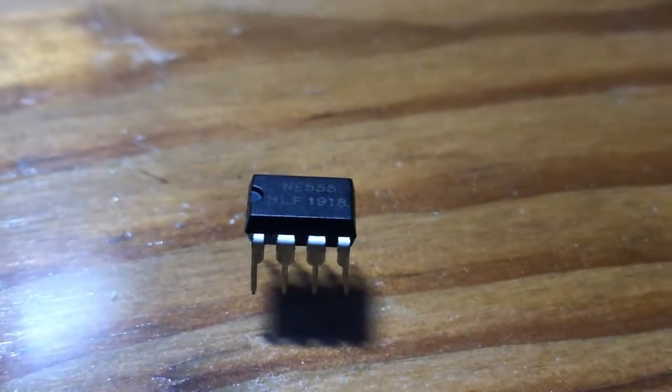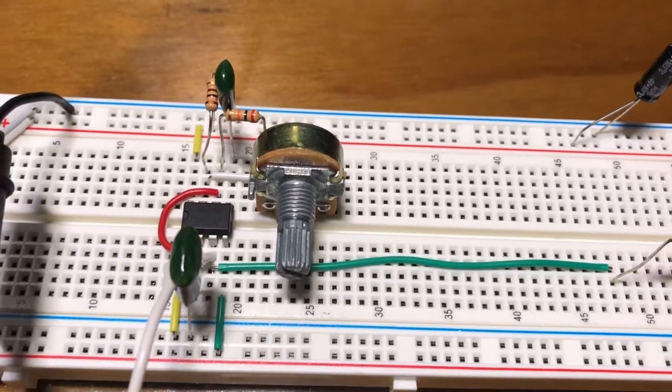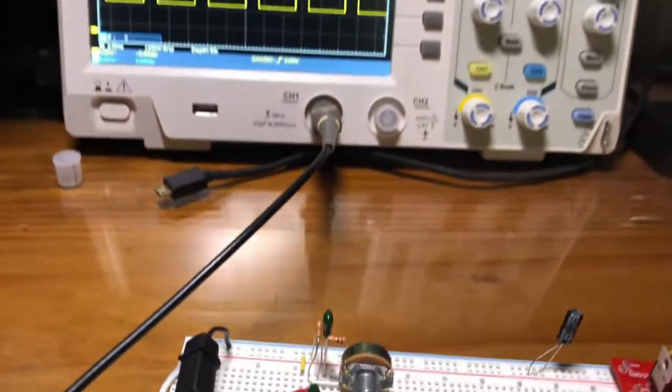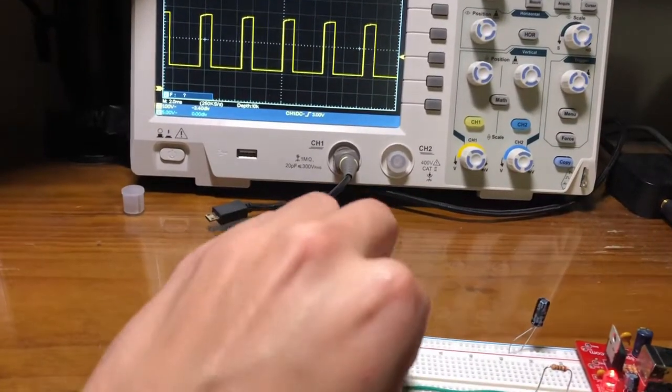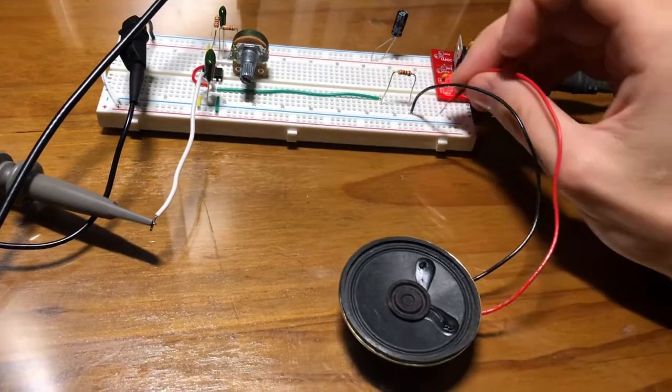The music box produces different notes with the help of our good old friend the 555 Timer. This little chip is used to make a square wave by repeatedly charging and discharging a capacitor, and the frequency at which this happens is controlled by both the capacitance and the resistors that limit current going into and out of it. If we connect the speaker to the output, we get a tone of said frequency.